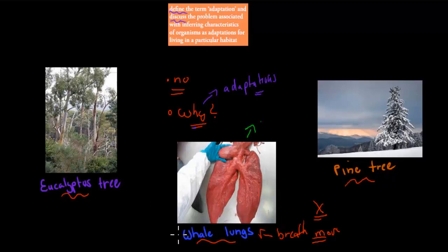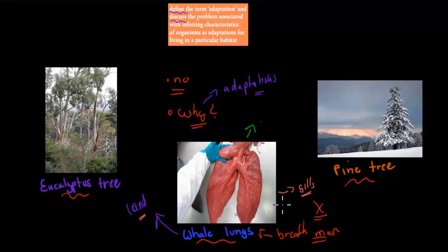The whale is actually a descendant of something that used to live on land. On land, having lungs made sense because it needed them to breathe oxygen. But it would actually be more effective if it had gills underwater. So we shouldn't just say they have lungs because it helps them breathe more oxygen — we should look at their actual environment to see if it's a true adaptation.